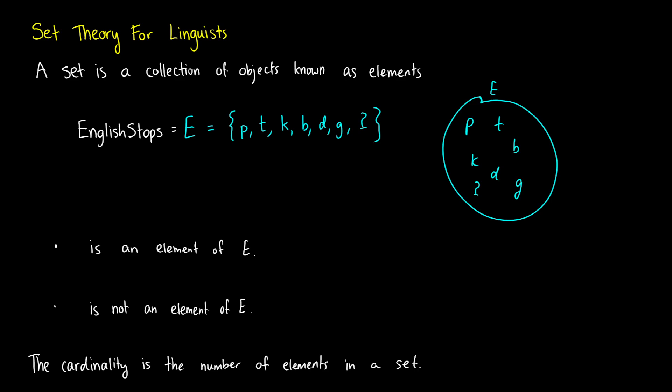A lot of times you'll see these represented as circles. So we have things in our set, this is like a classification method, and we have things that are not in our set. For example, we could say that P is an element of E using this little epsilon sign. If we have something that's not in our set, like the sound F, which is a fricative, not a stop, then we would write that F is not an element of E.